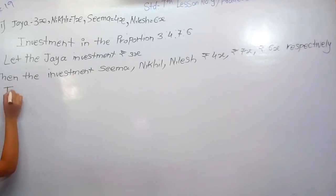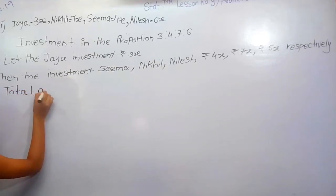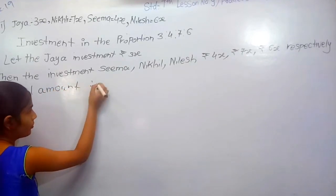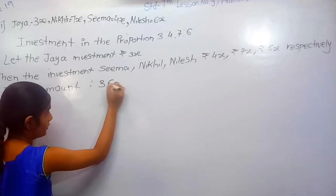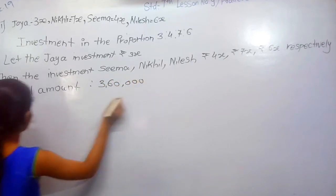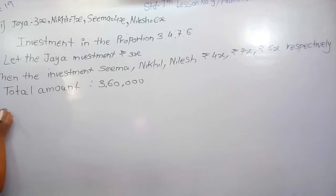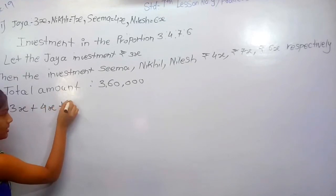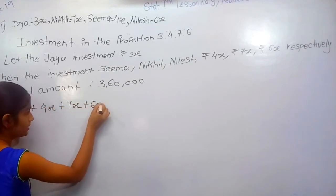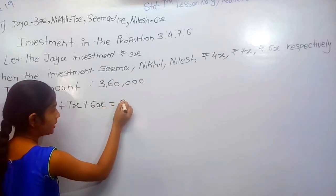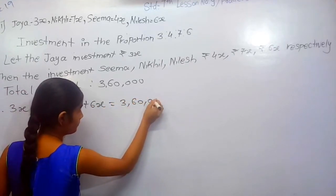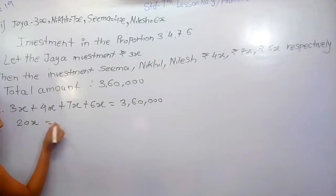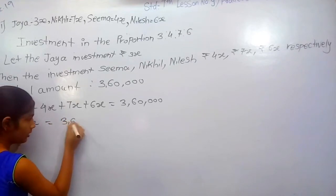Total amount is Rs. 3,16,000. Therefore, 3x plus 4x plus 7x plus 6x is equal to 3,16,000. Therefore, 20x is equal to 3,16,000.